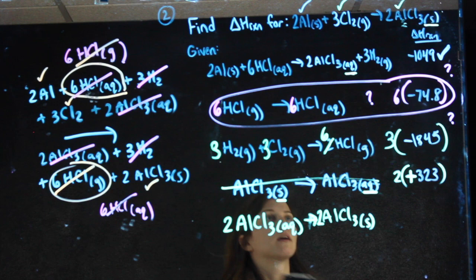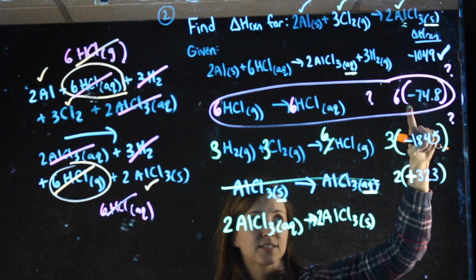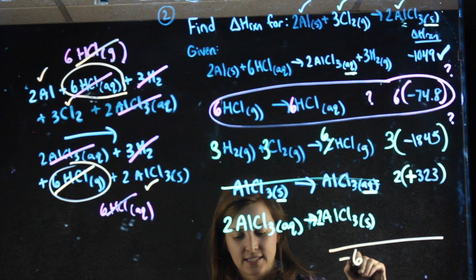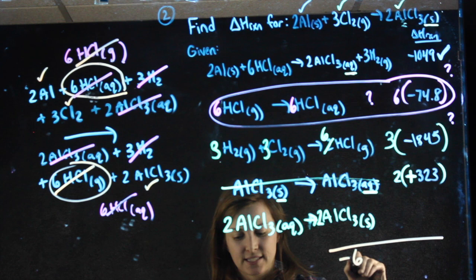In the calculator: negative 1049 plus 6 times negative 74.8 plus 3 times negative 1845 plus 2 times 323. Adding all of that up gives negative 6386.8 kJ/mol. That is the final answer. This was the tedious step — you don't have to check your work this way every time, but you always can.